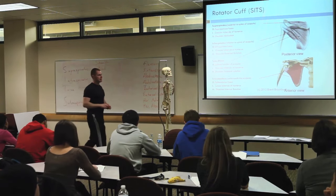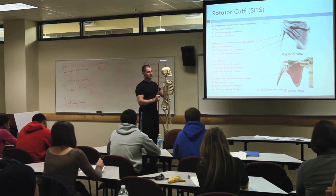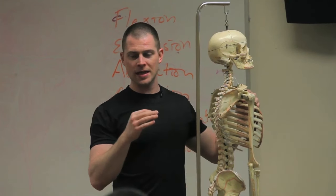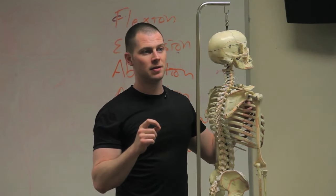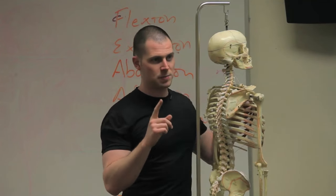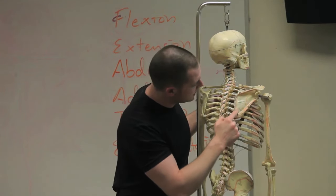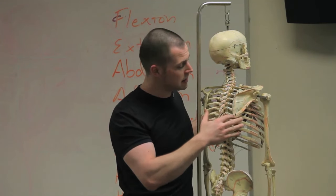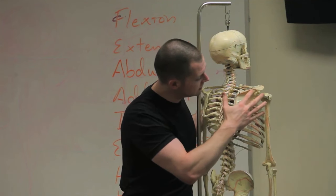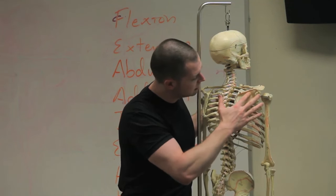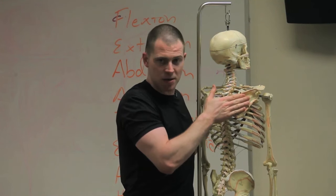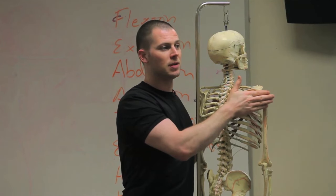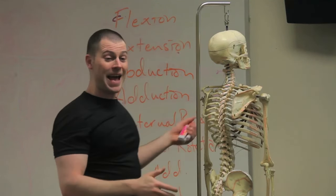Infraspinatus is in the infraspinus fossa - the indentation inferior to the spine of the scapula. This infraspinus fossa covers all this area here; you can come look at it on your breaks. The infraspinatus goes from the back of the scapula to the back of the humerus, so it contributes to external rotation.